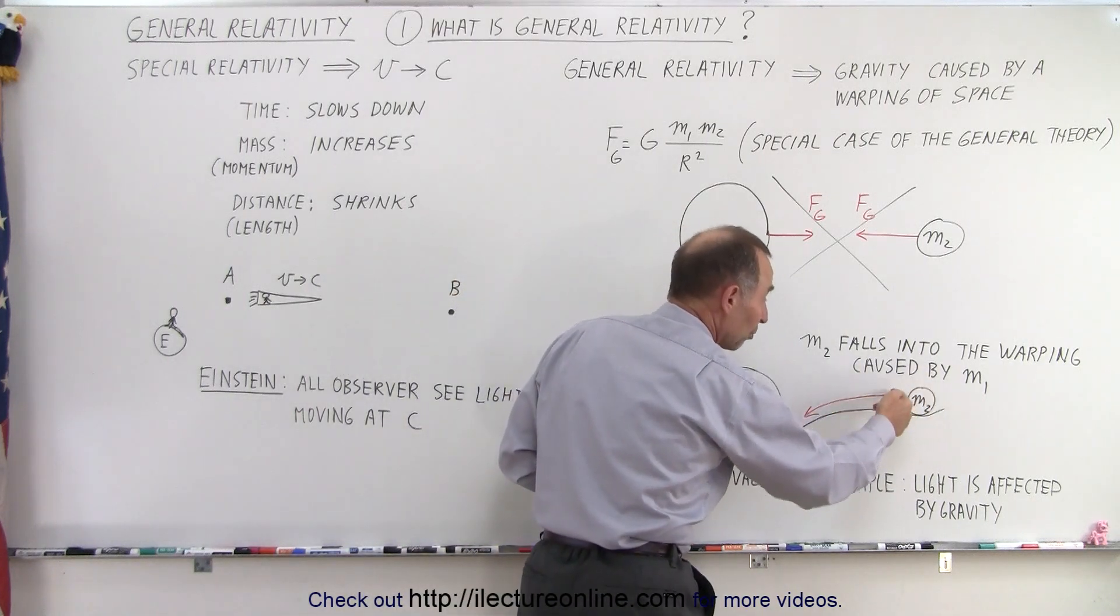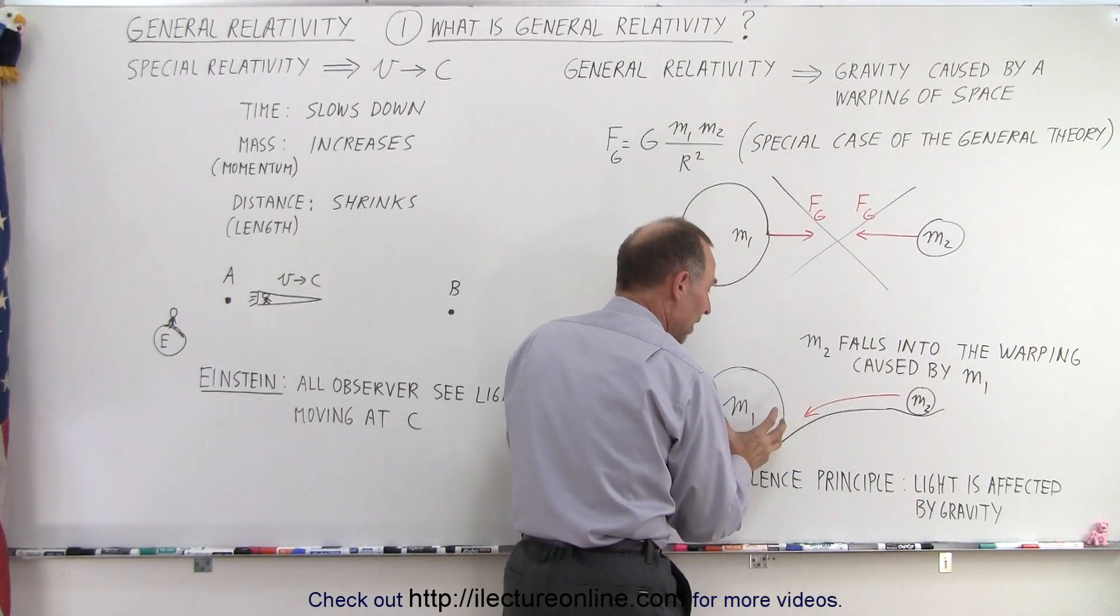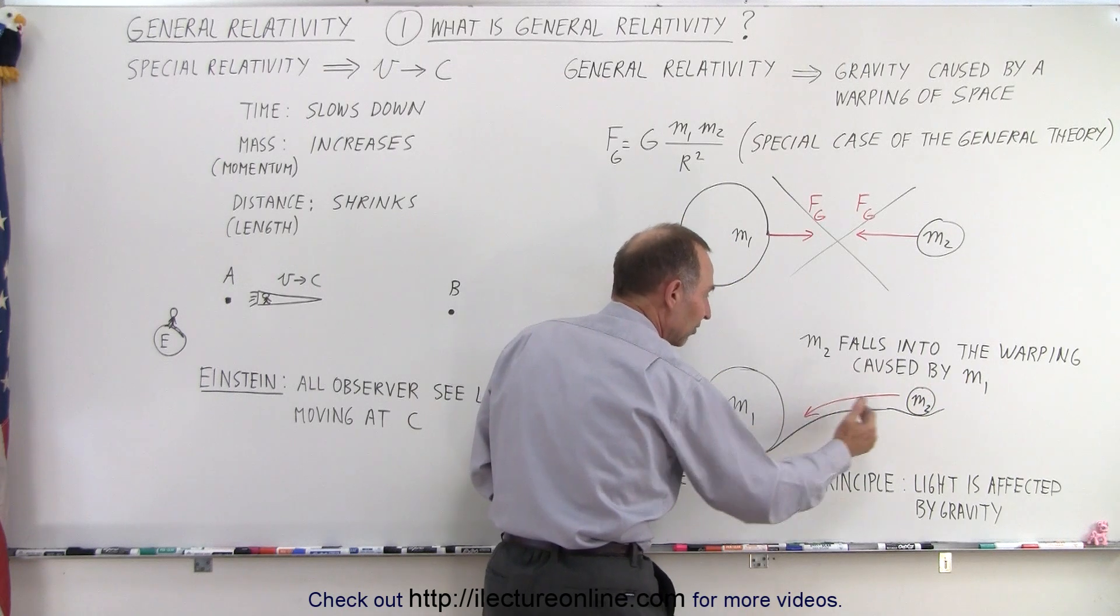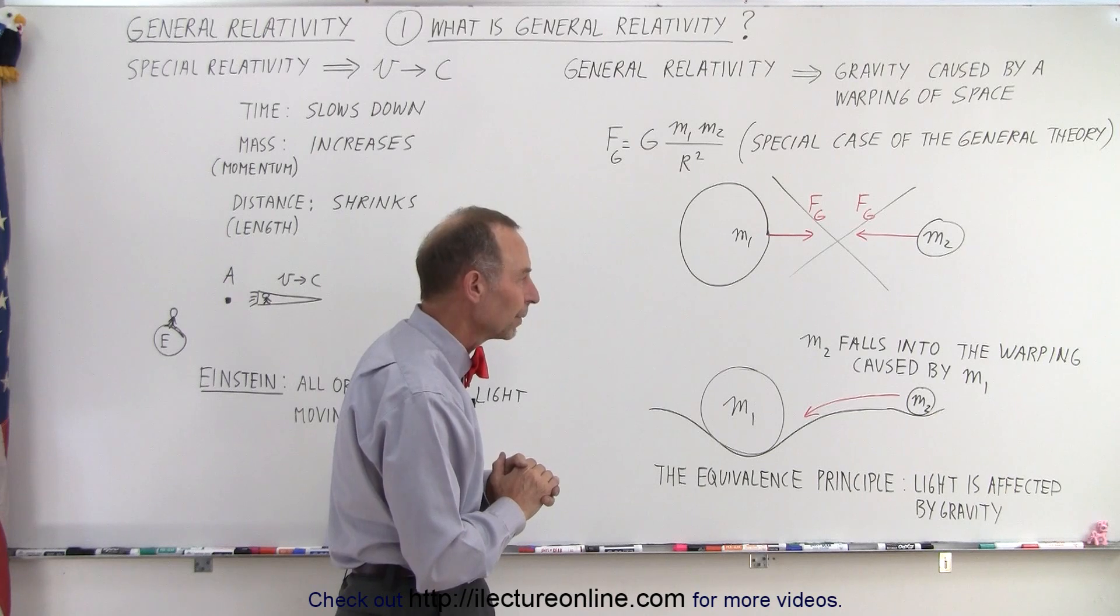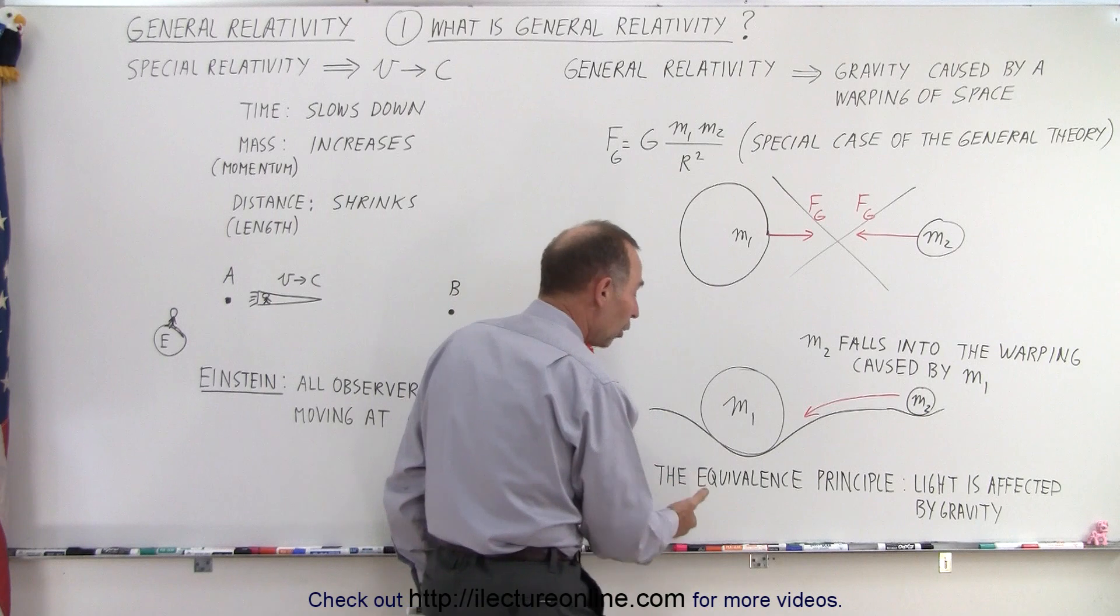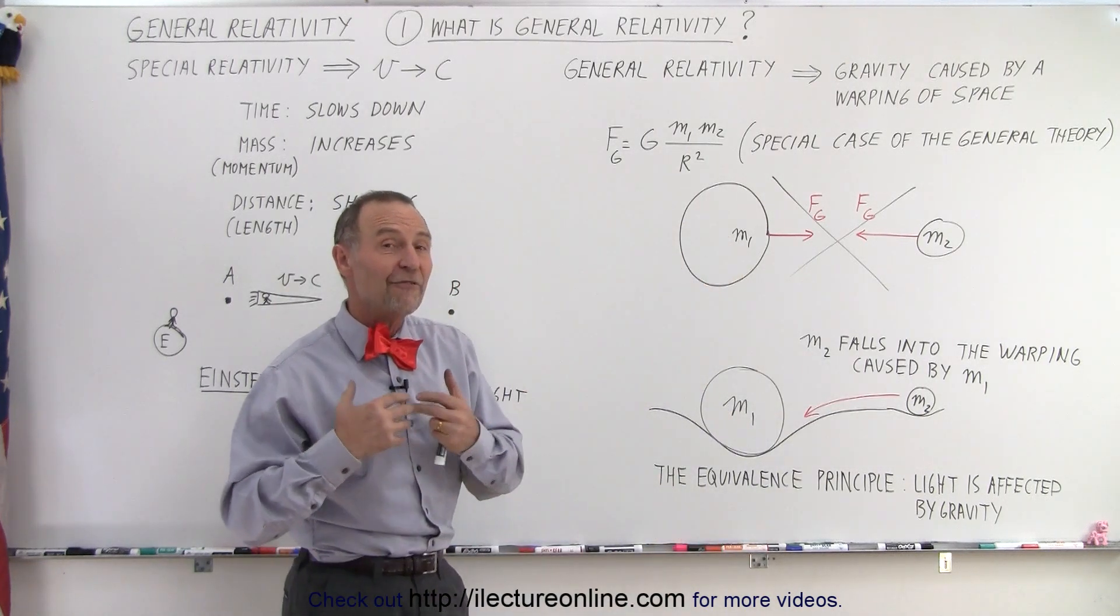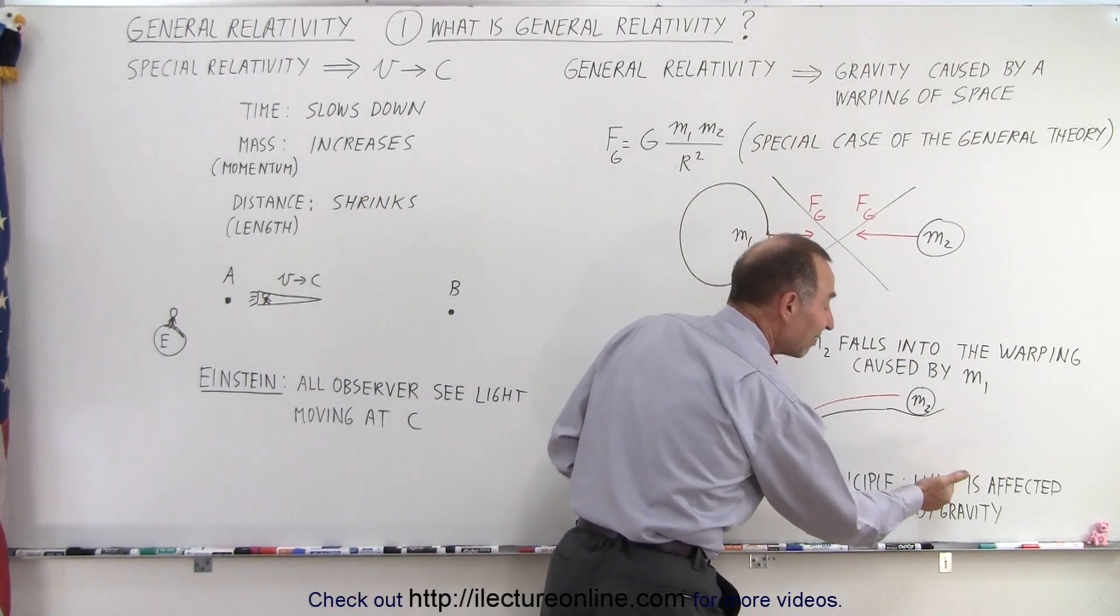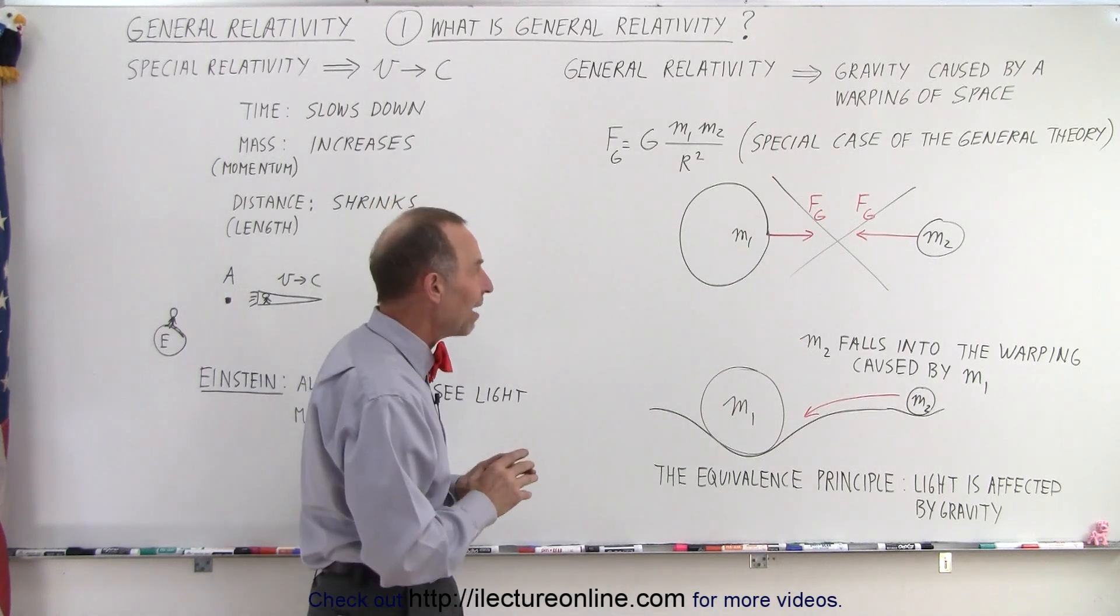Now, of course, this smaller mass will also warp space to a smaller extent, but essentially the effect by the bigger mass is greater, and so the smaller mass will fall towards the bigger mass, simply because it falls into that curvature, in that warping of space. And all this came about by Einstein's realization that there's what we call the equivalence principle, and we'll deal with that in more detail later, but the effect of the equivalence principle is that he claimed that light itself, light which has no mass whatsoever, is also affected by gravity.